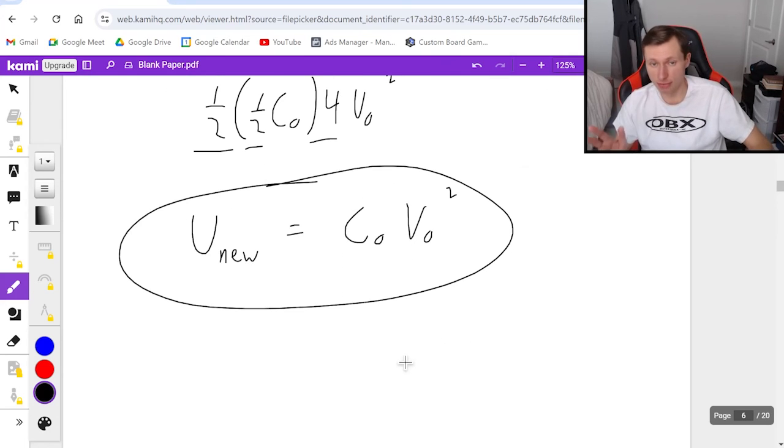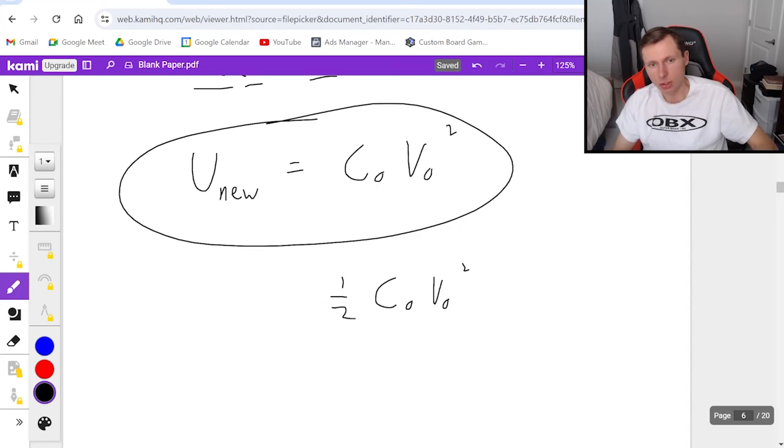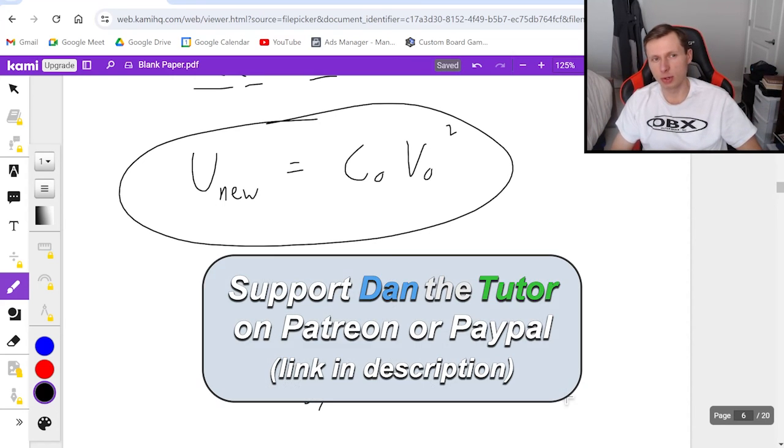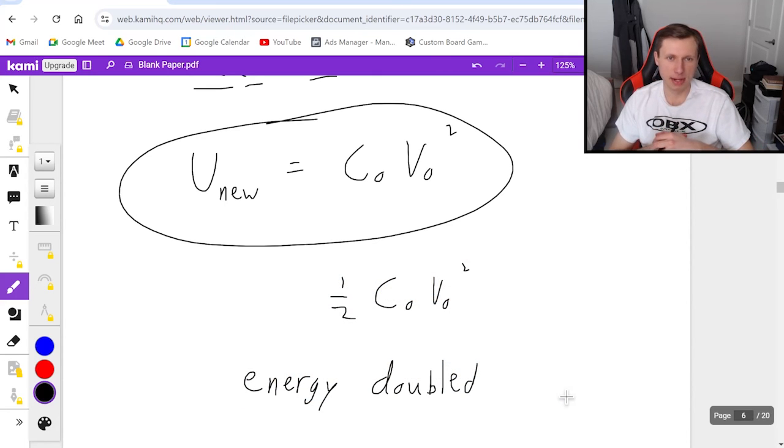And that's my answer in terms of the variables they wanted, or comparing that to the original one half C naught V naught squared. You could also say that the energy doubled when I doubled the distance. And so there, that's going to do it for this problem and this video. Thank you all for watching. I hope you have a great rest of your day and I'll see you in the next video. Take care and buh-bye.